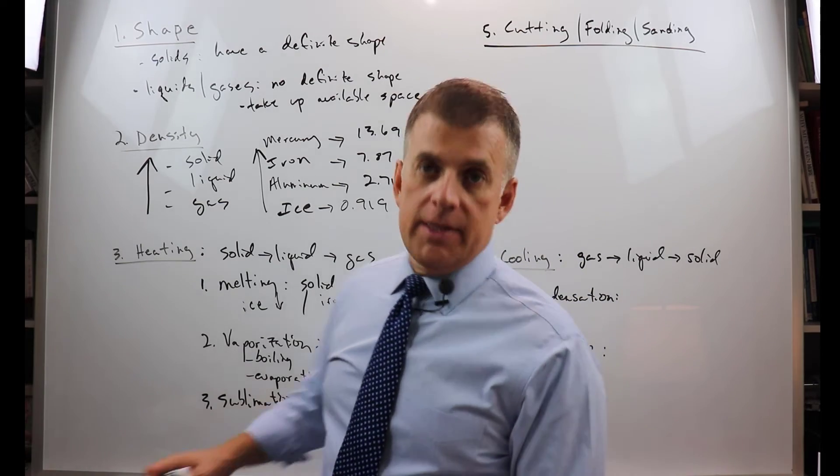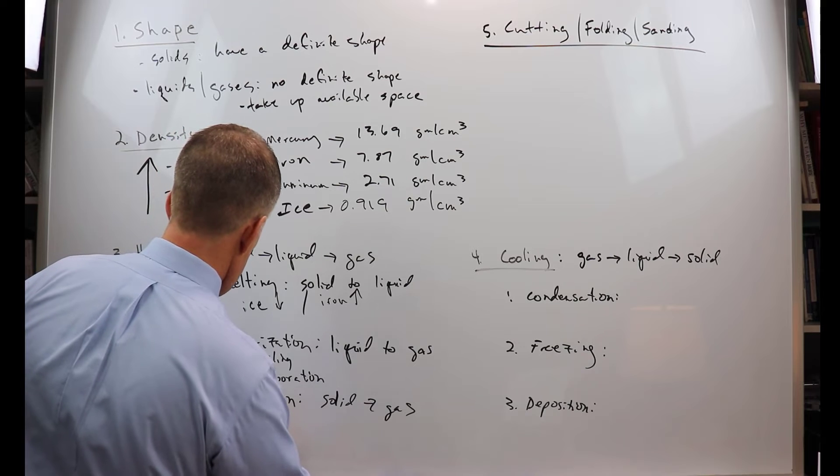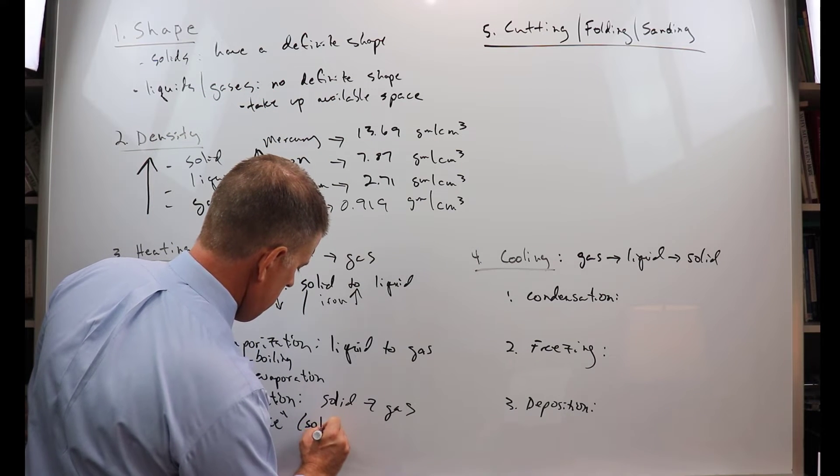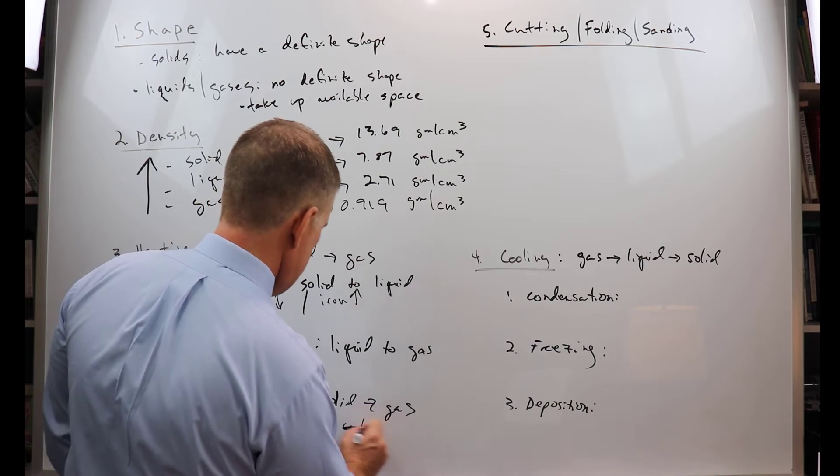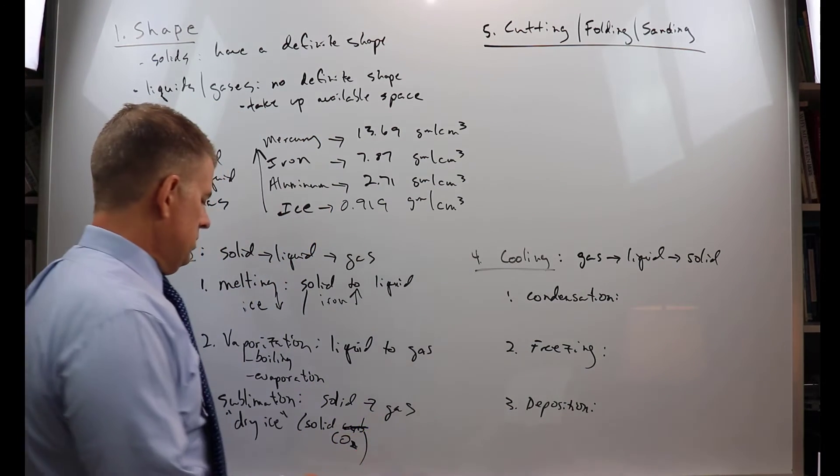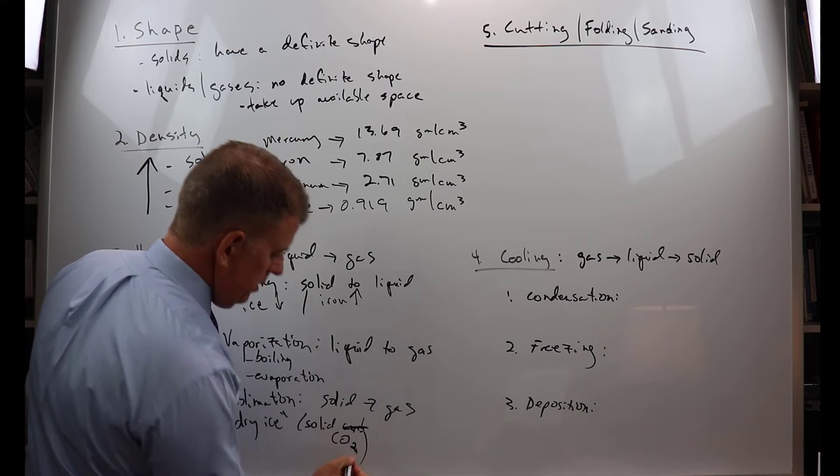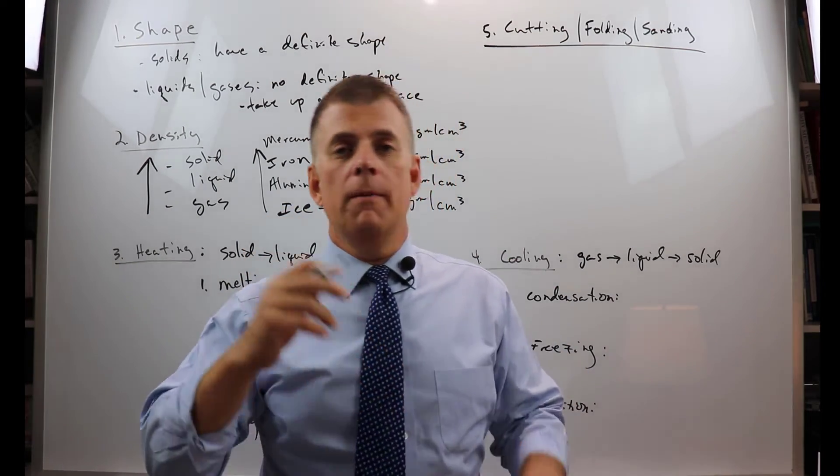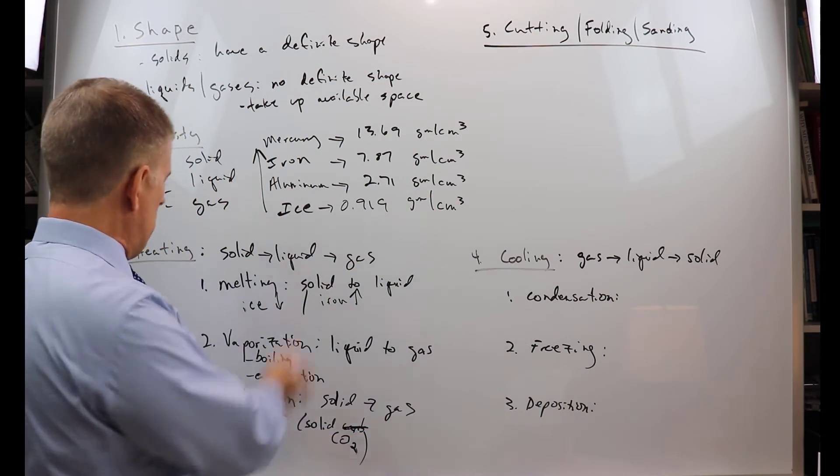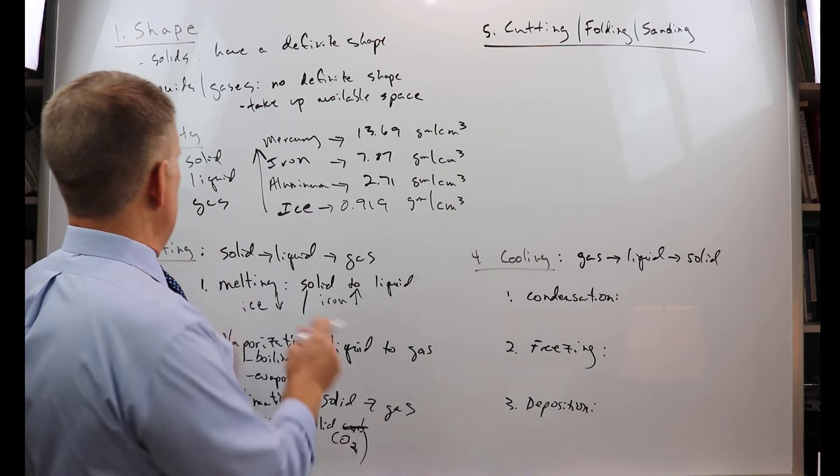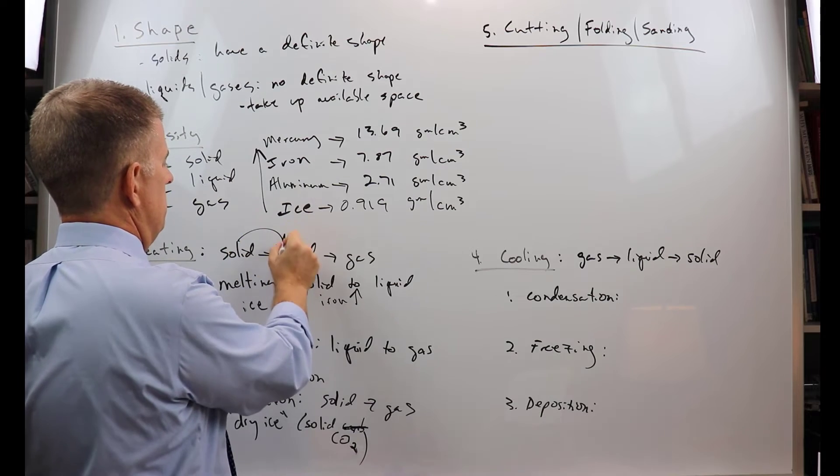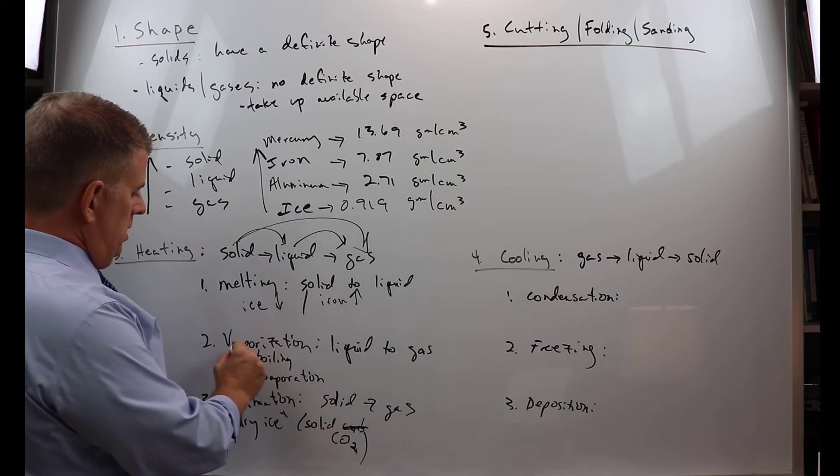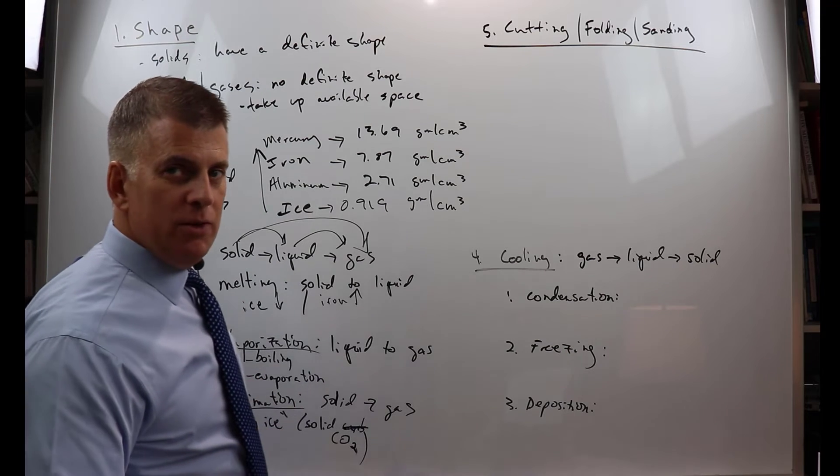Now this one, sublimation - the example that's pretty well known is dry ice. We call that dry ice, which is just solid carbon dioxide. I'll just call it CO2. Solid CO2, solid carbon dioxide, that just goes straight from a solid to a gas. And those are the different terms, the different principles of heating. The process from solid to liquid to gas - the solids can go to a liquid, and the liquid can go to a gas, and a solid can jump all the way to a gas.